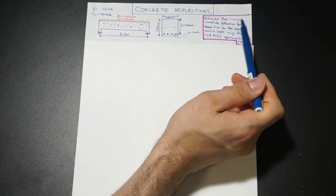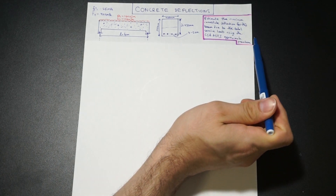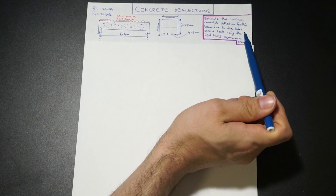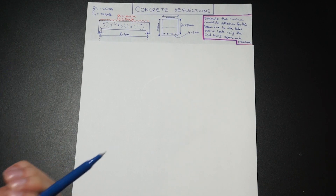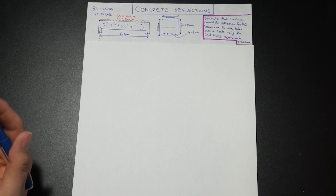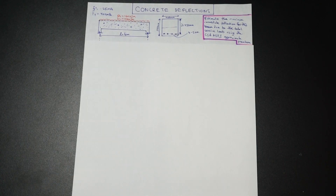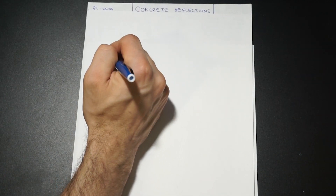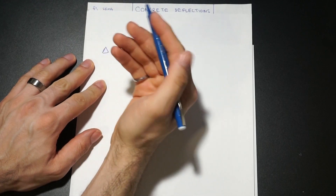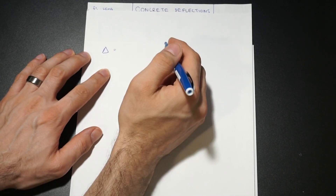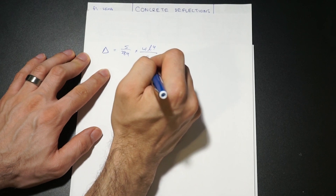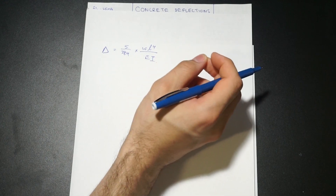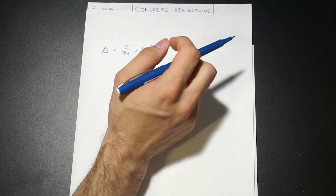We have a beam here with some service loads and a beam section. We're asked to estimate the maximum immediate deflection for this beam due to the total service load using the CSA approximate procedure. The approximate procedure in the Canadian code allows us to estimate concrete deflections using elastic deflection formulas. For a simply supported beam with span L, the maximum elastic deflection is 5 over 384 times W times L to the 4th over EI.